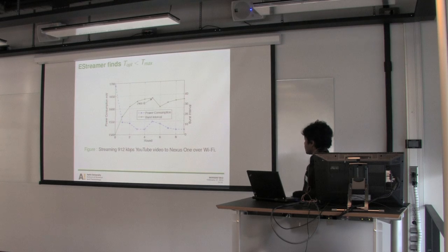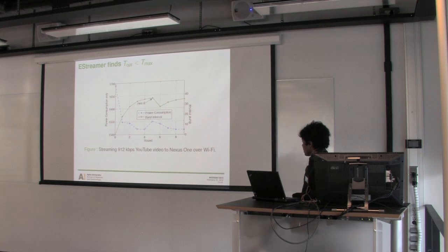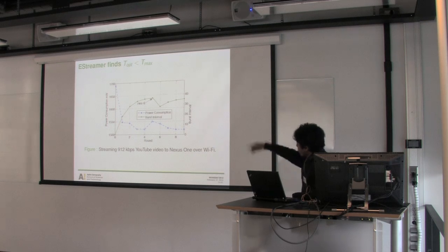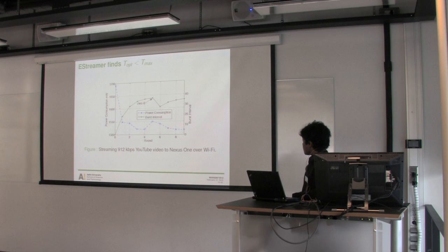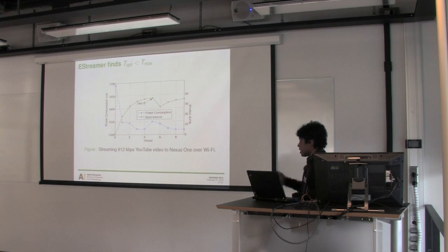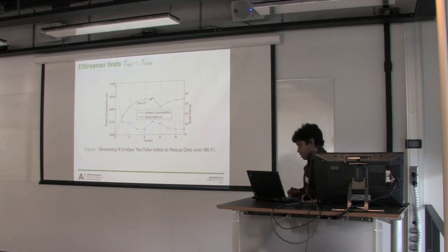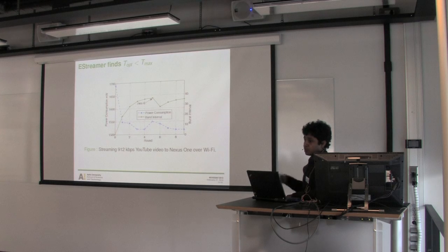This is one case with real measurement where the optimal burst size is smaller than Tmax. For example, in the fifth burst, eStreamer finds a zero window advertisement and decreases the burst interval. We use a binary search approach because increasing the burst level one by one would take too long to reach the optimal.